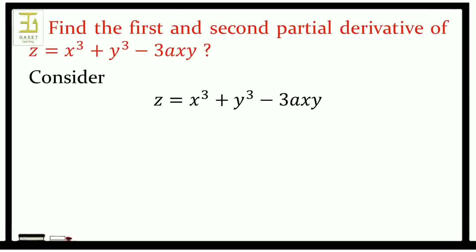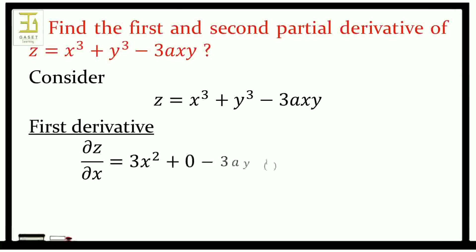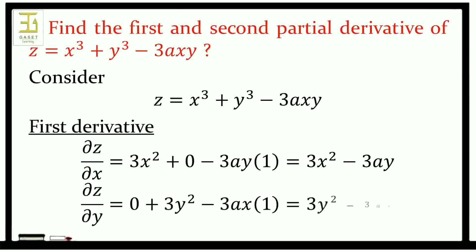We need to find the first derivative of z with respect to x and with respect to y. Dou z by dou x is equal to 3x squared plus 0 minus 3ay times 1, which equals 3x squared minus 3ay. And dou z by dou y is equal to 0 plus 3y squared minus 3ax times 1, which equals 3y squared minus 3ax.